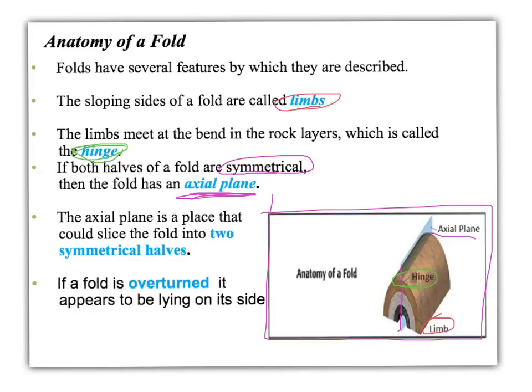Each of the two sides of the fold are known as the limbs — kind of like your legs are the limbs, the hinge would be your pelvic area, and the axial plane would go right through it. Sometimes the fold is overturned and lying on its side, so the axial plane is horizontal. Or it could be partially turned and the axial plane could be diagonal. The big thing is to find the axial plane, you need to find where the two symmetrical halves are.